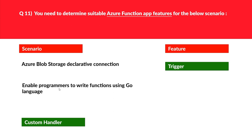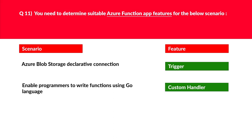Let's look at statement two: enable programmers to write functions using Go language. If we read the statement carefully, there is a need to create a function in Go language, hence 'custom handler' fits here. We'll move this and lock these as the correct answer.